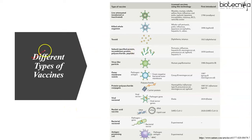Vaccines are generally classified as live or non-live — sometimes loosely referred to as inactivated — to distinguish those that contain attenuated replicating strains of the relevant pathogenic organism from those that contain only a component of a pathogen or killed whole organism. Here on your screen is a table that summarizes the different types of vaccines. Live vaccines are developed so that in an immunocompetent host they replicate sufficiently to produce a strong immune response but not so much as to cause significant disease manifestations. Examples include vaccines for measles, mumps, rubella, yellow fever, rotavirus, oral polio vaccine, BCG vaccine for tuberculosis, and live attenuated influenza vaccine.